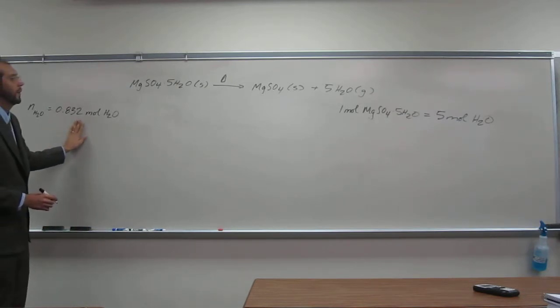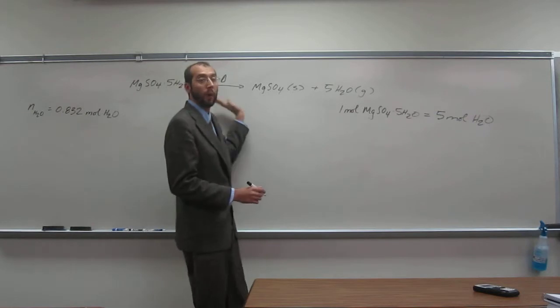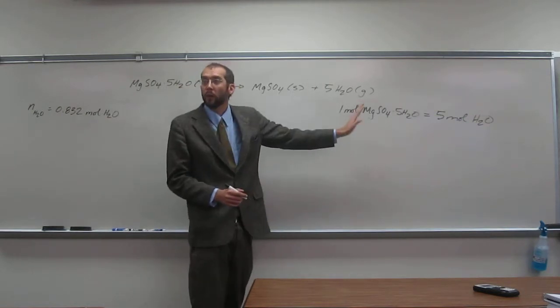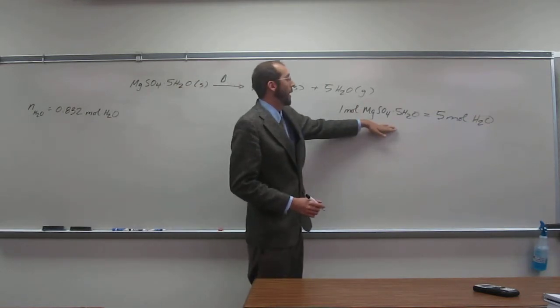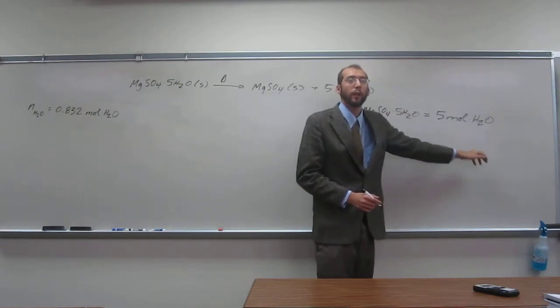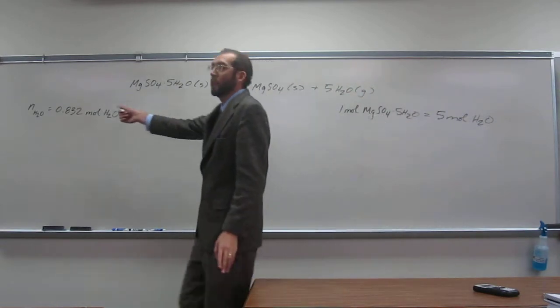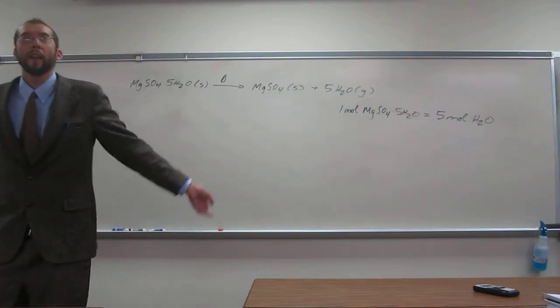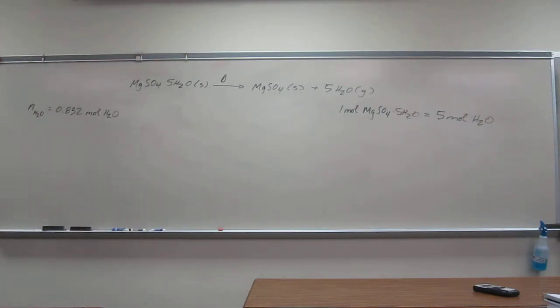So we have this many moles of water, and we know from the chemical equation, you guys recall, that one mole of magnesium sulfate hydrate equals five moles of water. So should we be able to, with this information, get how many moles of magnesium sulfate hydrate we started out with? So how would we do that? Help me out.